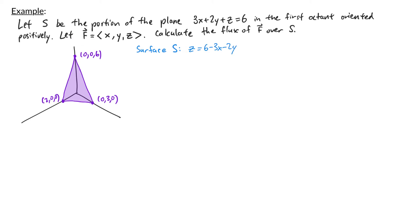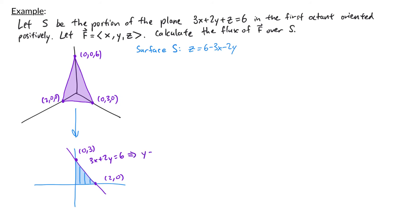To find the region R that the surface is over, we project the plane onto the xy-plane. Choosing the order of integration dy dx, the vertical lines through the region are bounded above by the line found by setting z equal to 0 in the plane equation: 3x plus 2y equals 6, which gives y equals (6 minus 3x) over 2. So y goes from 0 to (6 minus 3x) over 2, and x goes from 0 to 2.